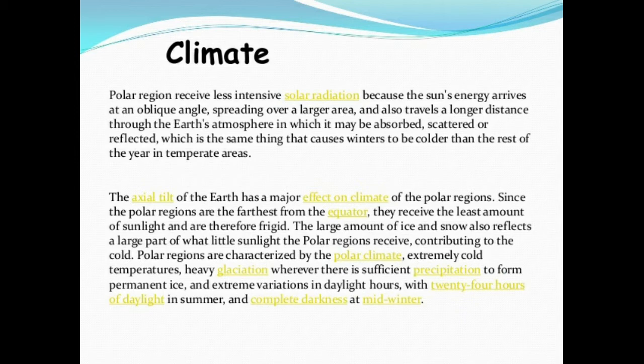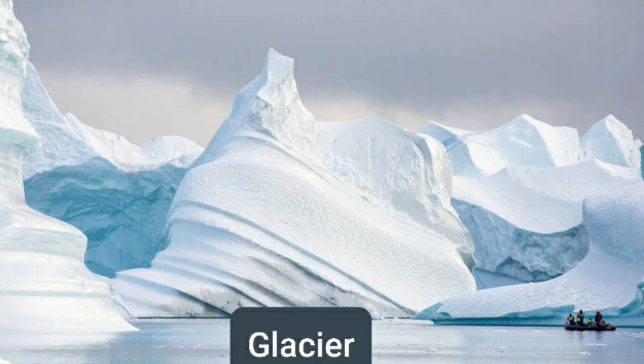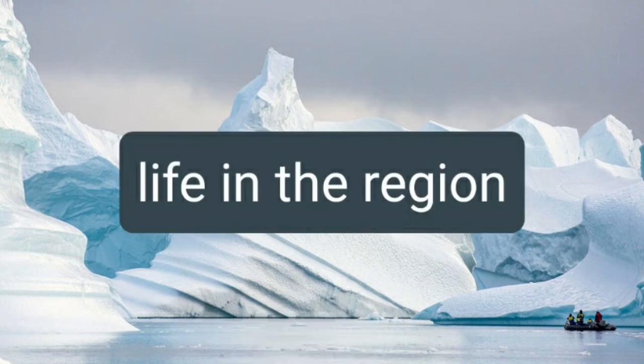The summer season is warm and lasts only for two to three months, with temperatures ranging from 3 to 12 degrees Celsius. In these regions there is 15 to 30 centimeters of rainfall in a year. The South Pole is the coldest, windiest, and driest place on Earth. The lowest temperature ever recorded here is minus 88 degrees Celsius at Vostok Station in Antarctica.